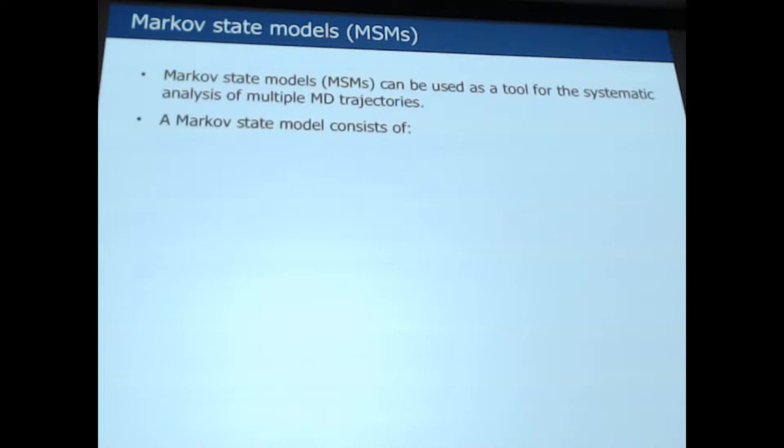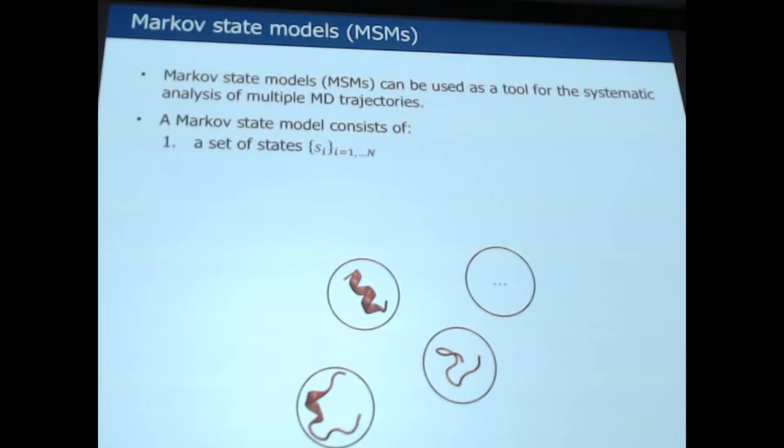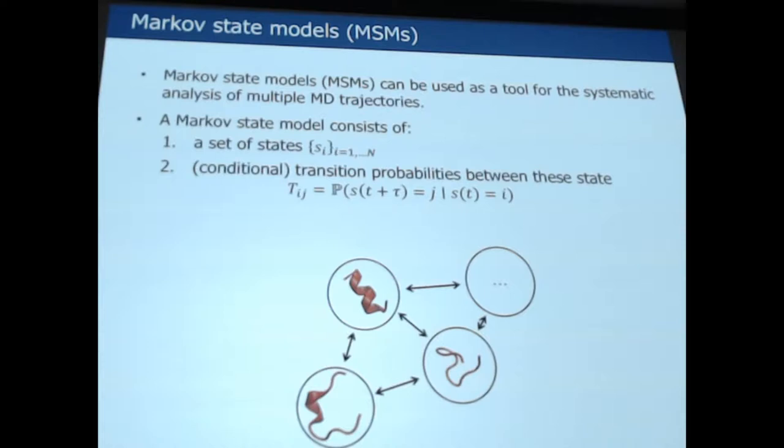Let me remind you a little bit of Markov state models and introduce my notation for them. So a Markov state model, in my case, consists of two things: a set of states S and a transition probability matrix T_ij, where the conditional jump transition probabilities are tabulated.